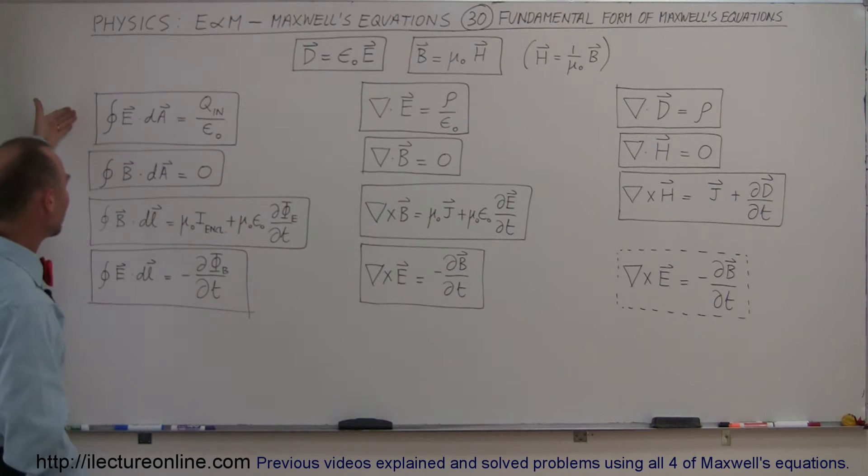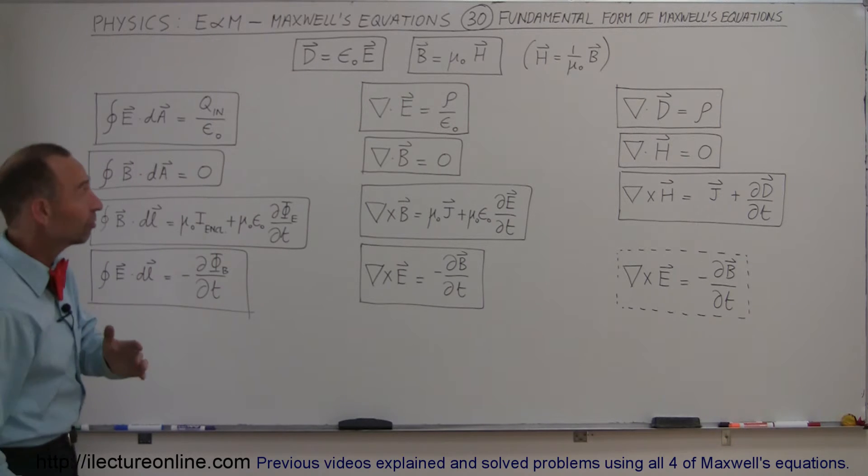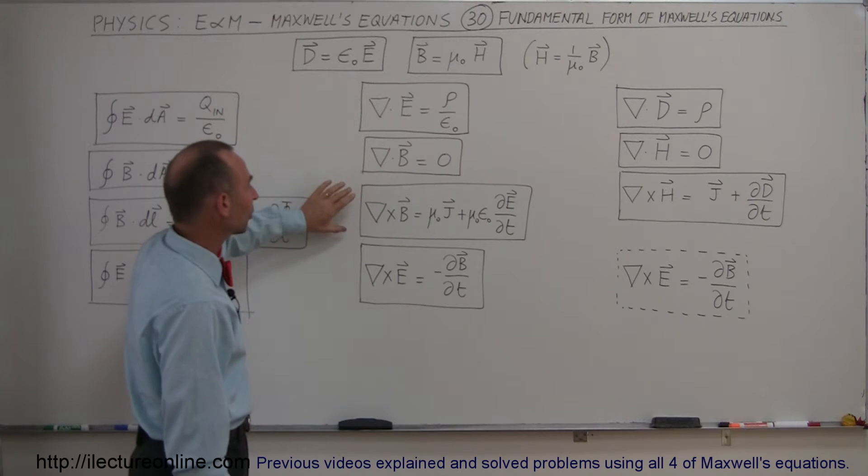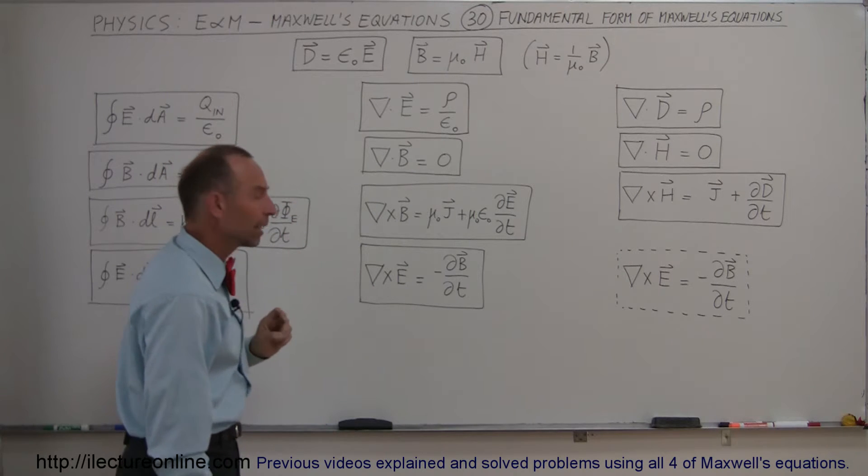So here we have the four equations of Maxwell in integral form. Here's Gauss's law, Gauss's law for magnetic fields, Ampere's law, and Faraday's law. And in the differential form, it's written like this: the divergence of E, the divergence of B, the curl of B, and the curl of E.